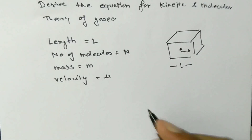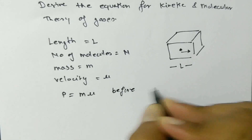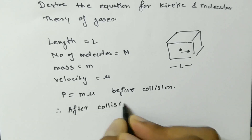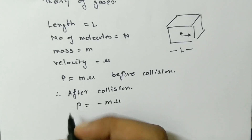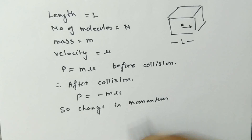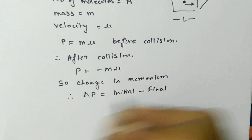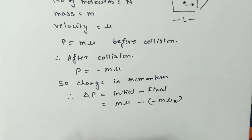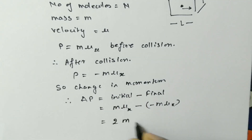The momentum will be P equals mass into velocity, and this is before collision. After collision, only the direction changes, and P becomes minus mu_x. So the change in momentum delta P equals initial minus final, which is mu_x minus minus mu_x, giving us 2 times mass into velocity in the X direction. This is equation 1.